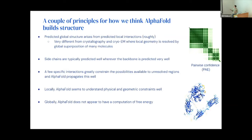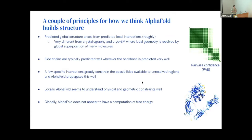Because of that, if you work with AlphaFold structures, you really should look at the pairwise alignment errors — the PAEs. You'll often see blocks of structures where we understand well how it's oriented within that block, but are much less confident between blocks. Side chains are predicted well, but only when the backbone is predicted really well — the side chains in AlphaFold arise from local geometric and chemical constraints. Often just a few interactions can be the difference between success and failure in a prediction. Globally, AlphaFold does not understand global free energy, and it definitely doesn't understand point mutations very well.